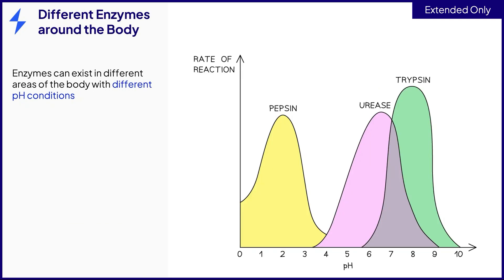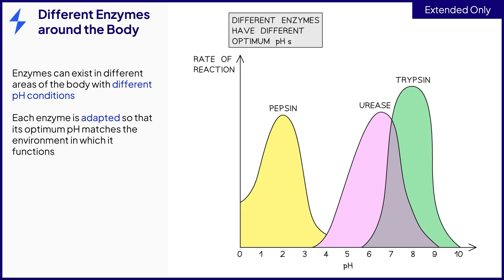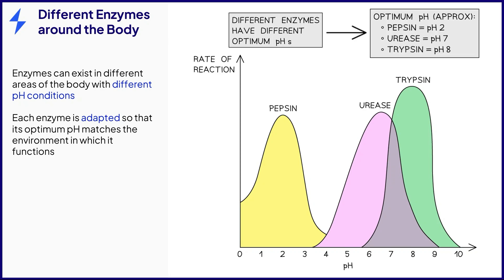Not all enzymes have the same optimum pH as each other and are instead adapted for the conditions of the area of the body in which they normally function. Some examples are shown in the graph here.